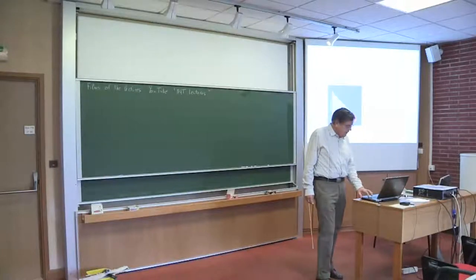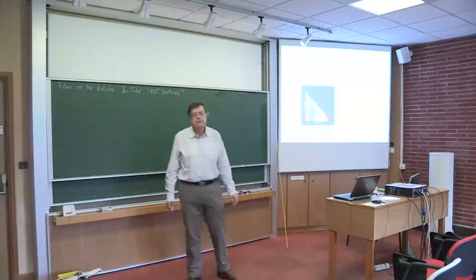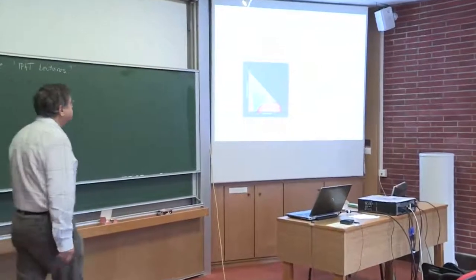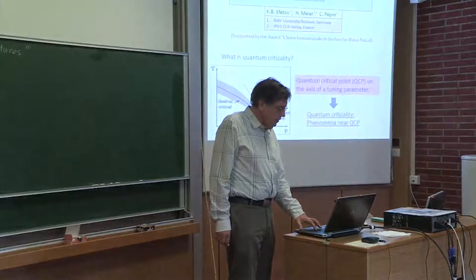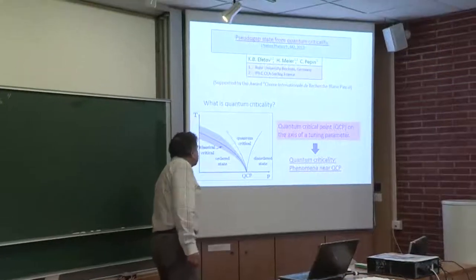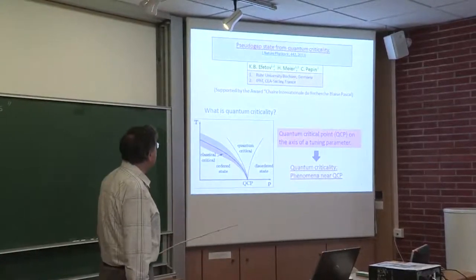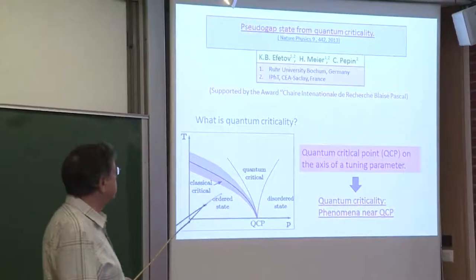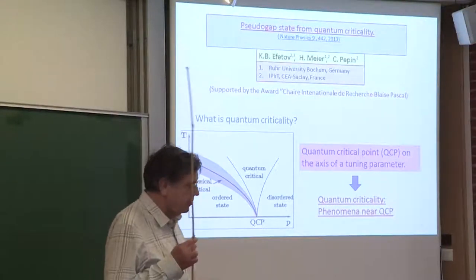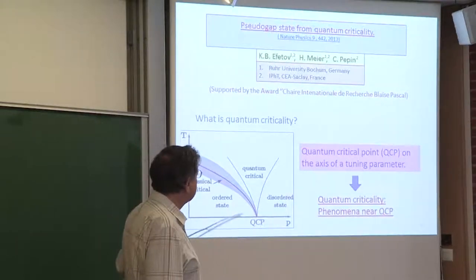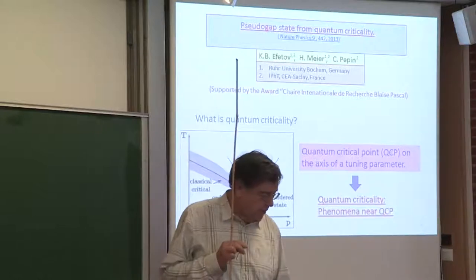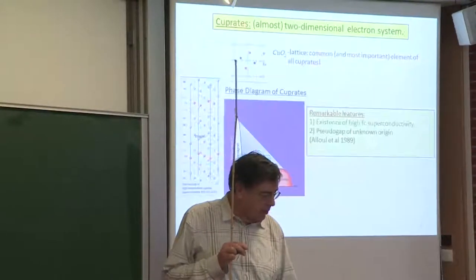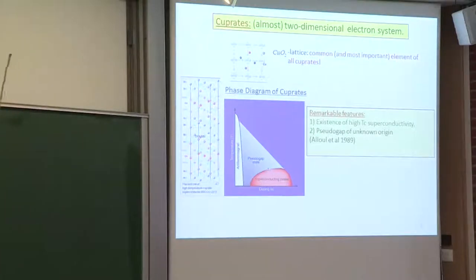In the last lectures I tried to explain what is generally meant by quantum criticality. The picture on the first slide showed that if you have two phases, you still have two phases — the only thing is that you have some non-trivial critical behavior in the region of the quantum critical point, which was at some point of the axis of the tuning parameter, like doping or something like that. Then slowly we moved to cuprates.